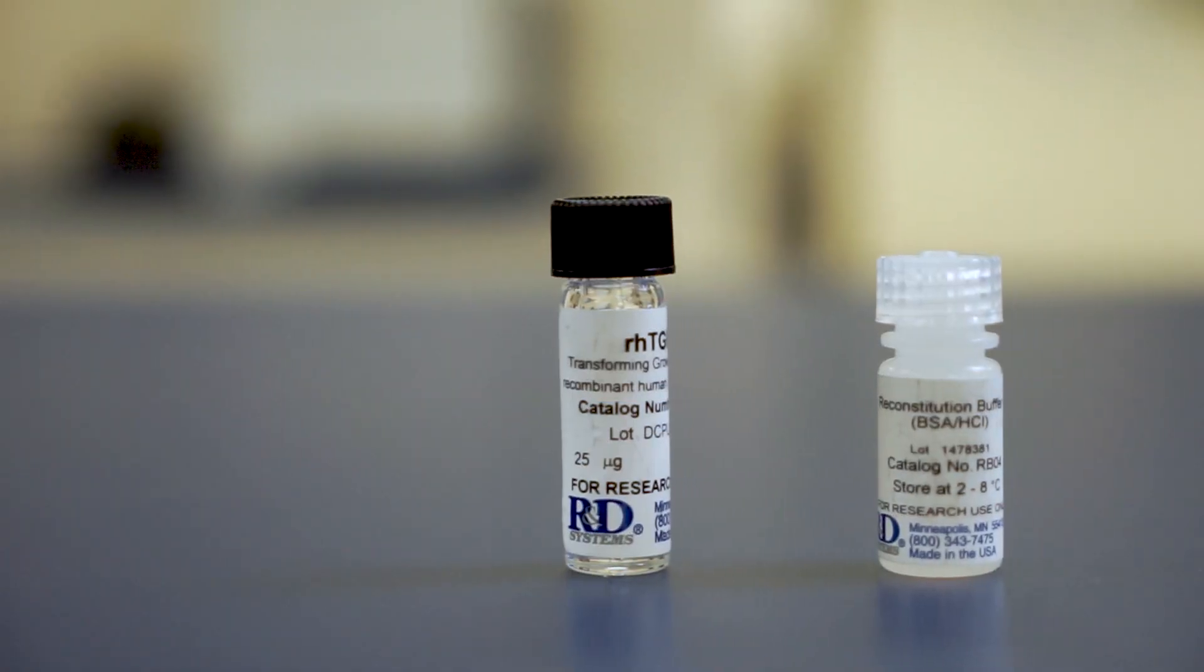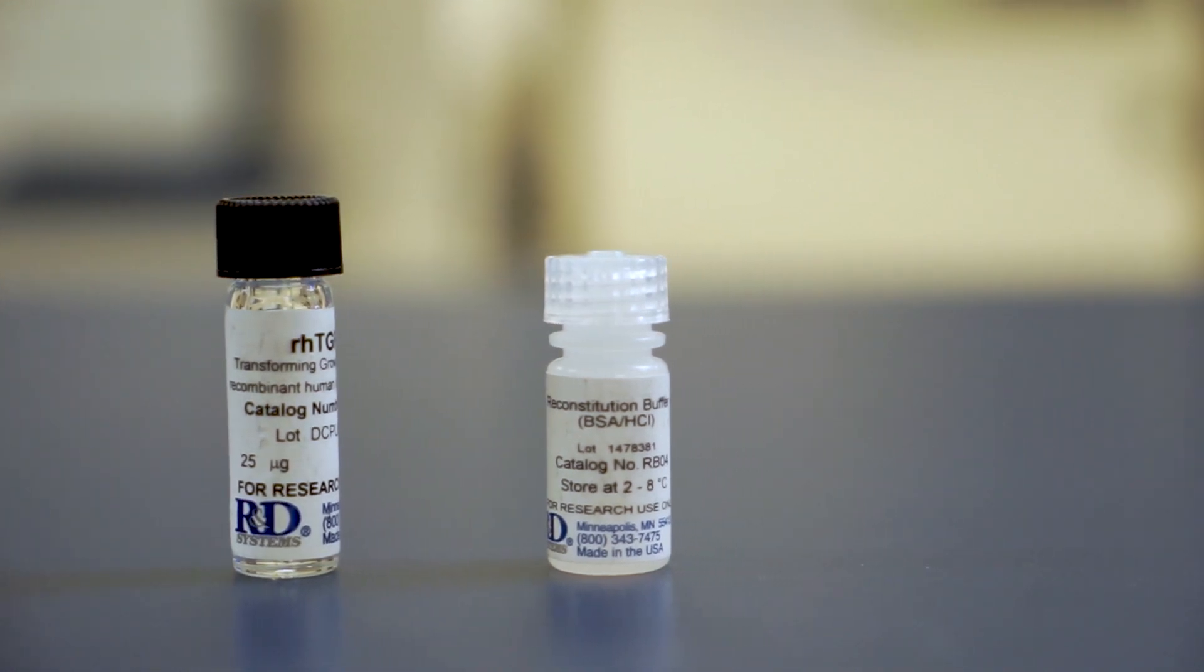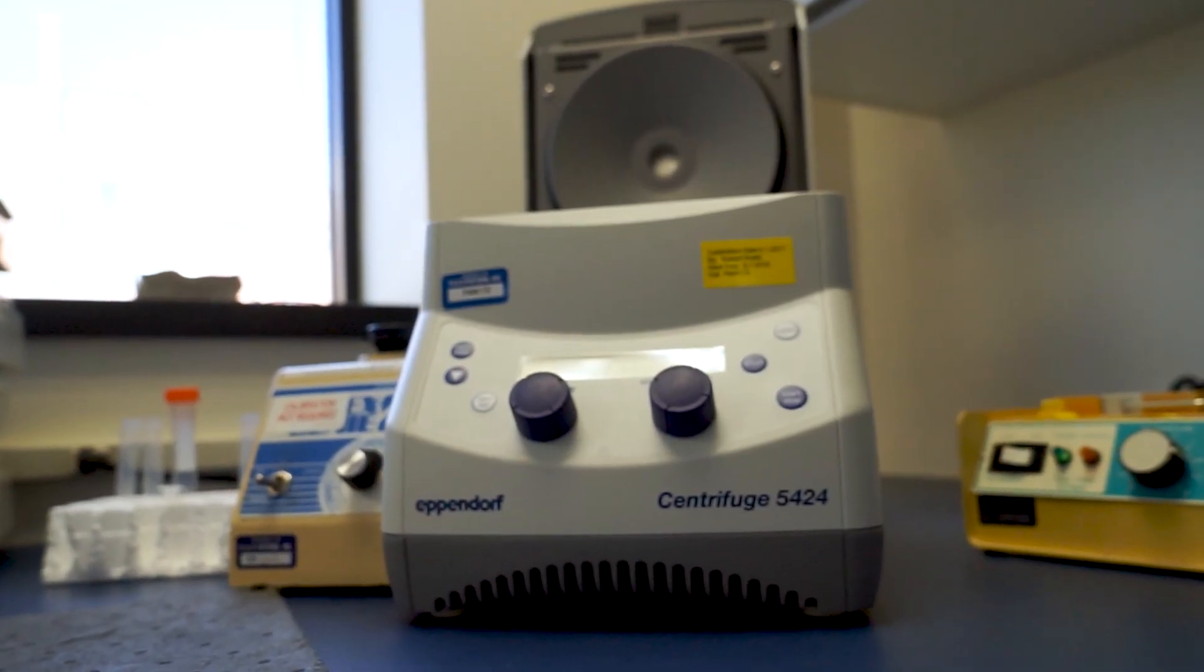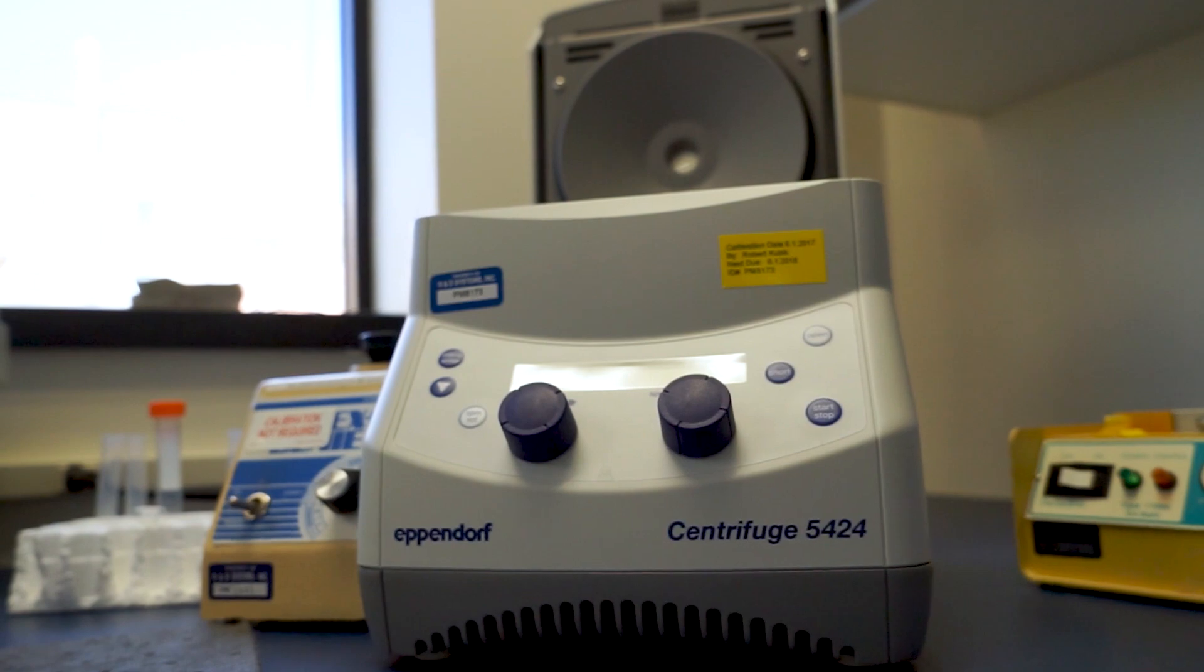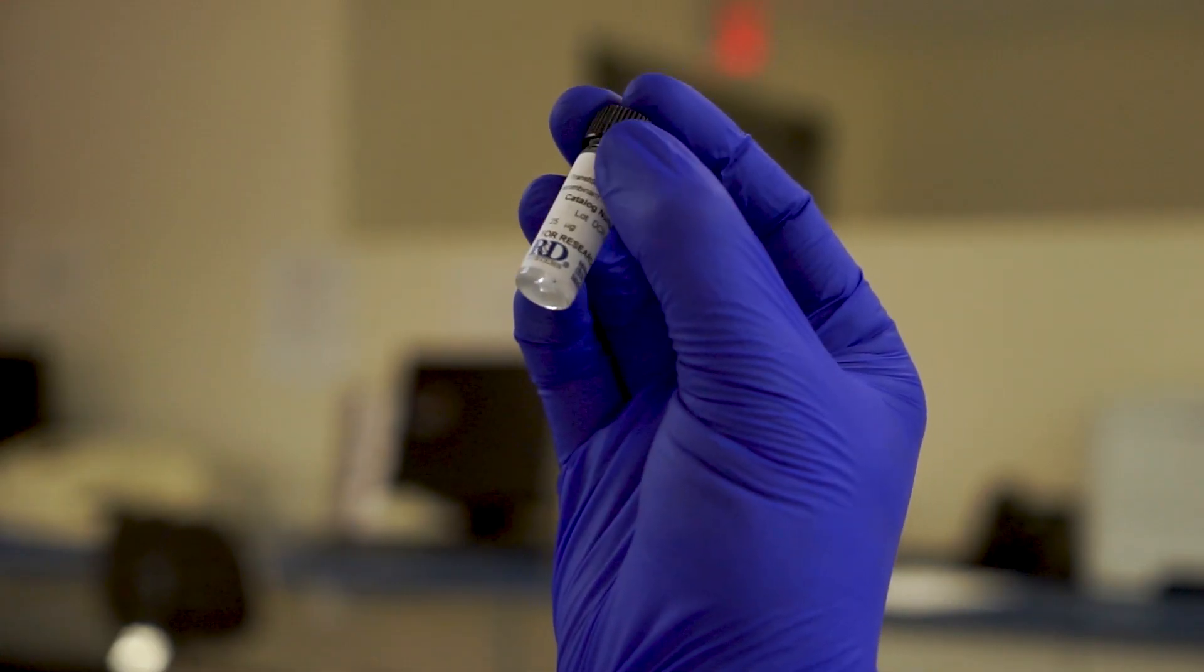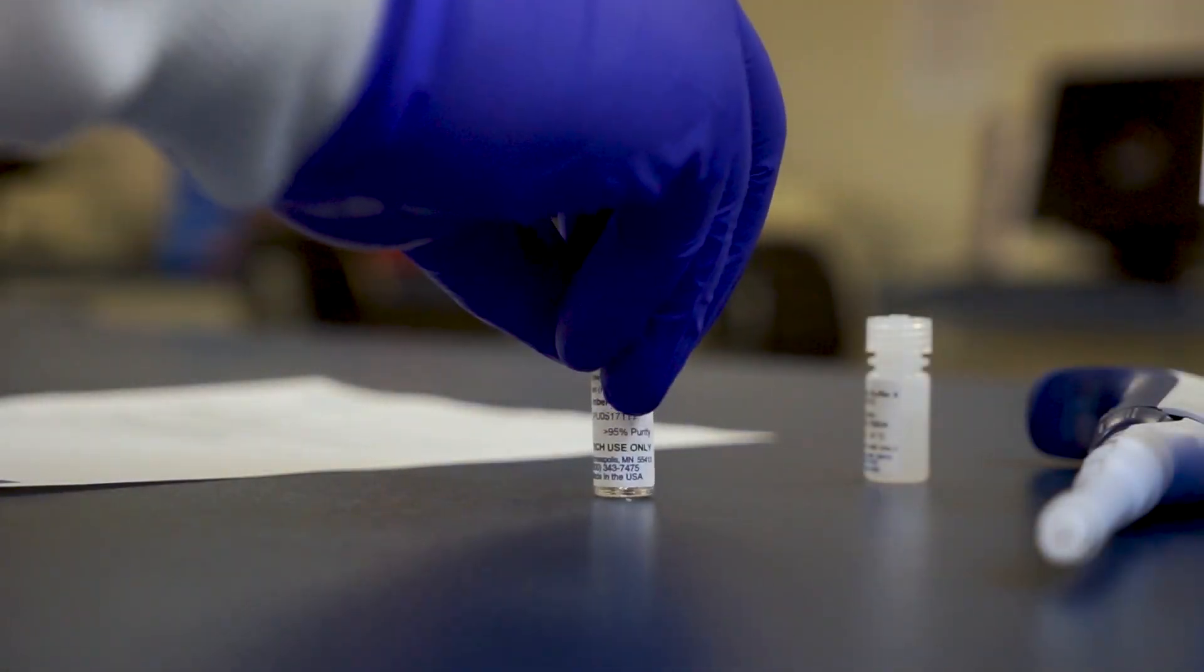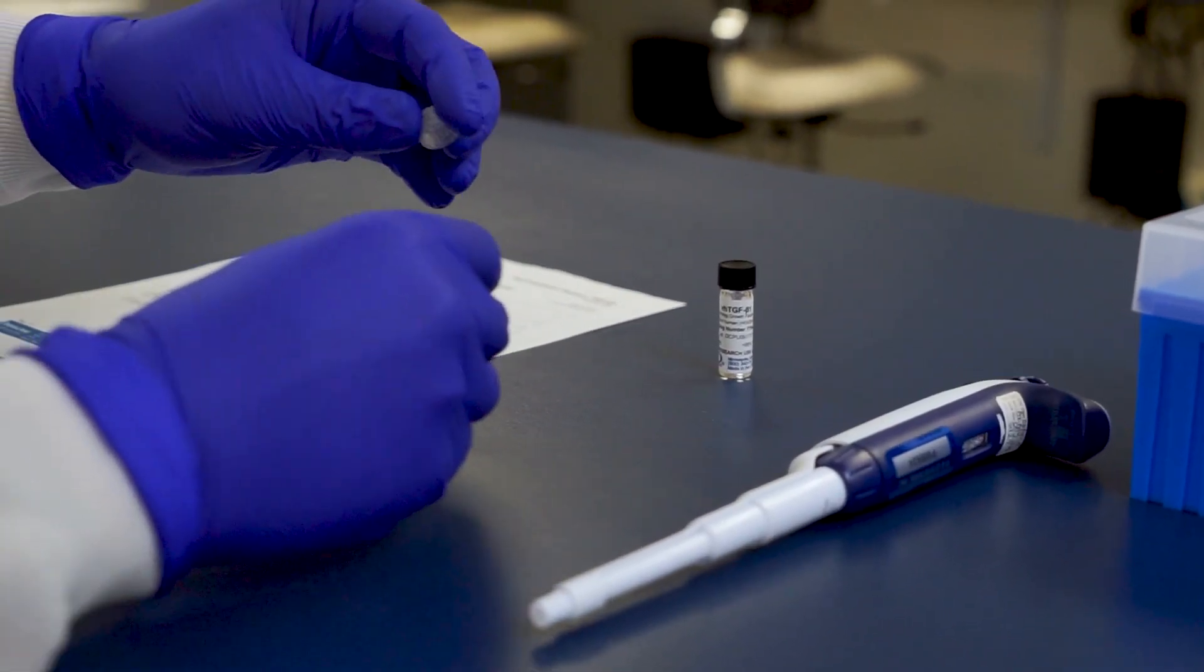When you're ready to reconstitute, first allow both the vial and the buffer to come to room temperature. Once at room temperature, we recommend performing a quick spin in a centrifuge. This ensures that all the lyophilized pellet is in the bottom of the tube. You can lightly tap down the vial if it does not fit into the centrifuge you have available.